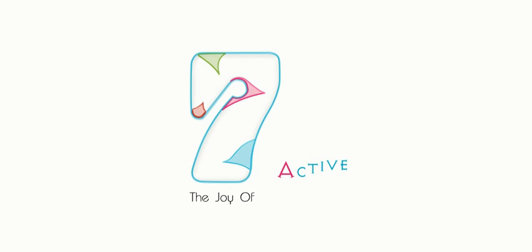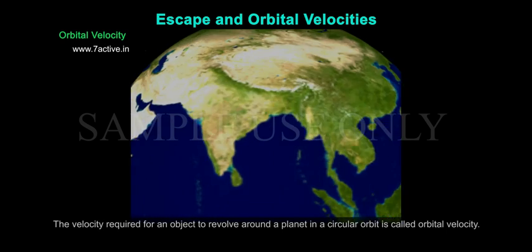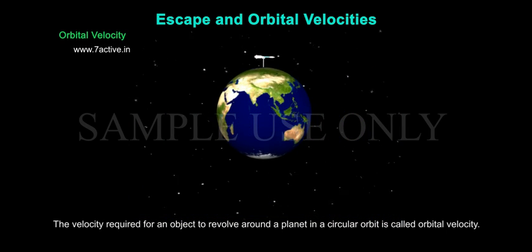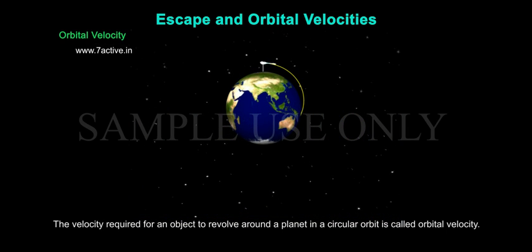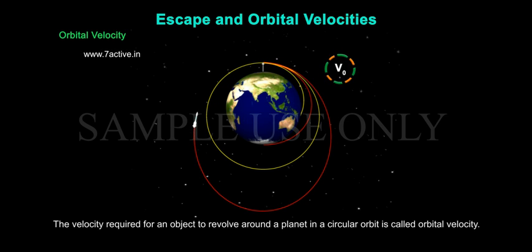I am going to study about Escape and Orbital Velocities. Orbital Velocity is the velocity required for an object to revolve around a planet in a circular orbit. It is denoted by V0.